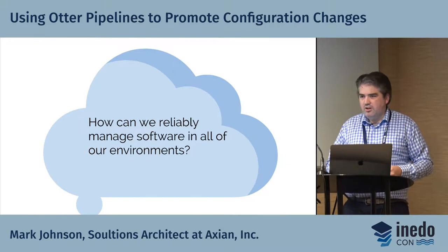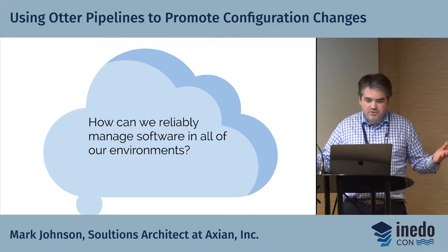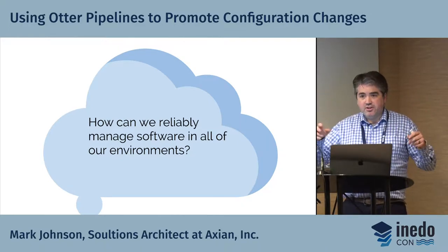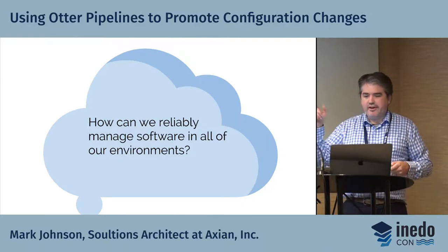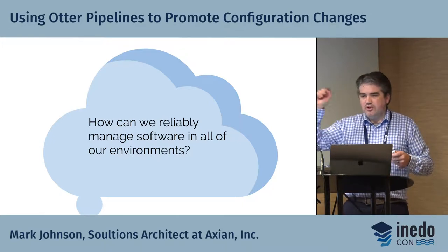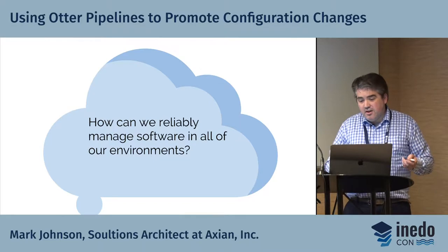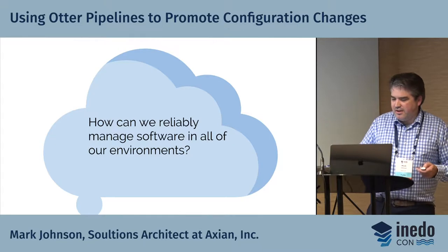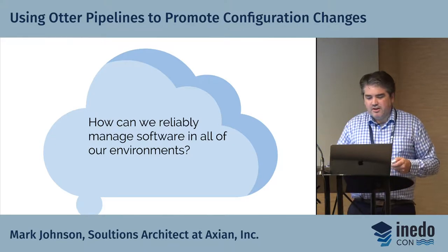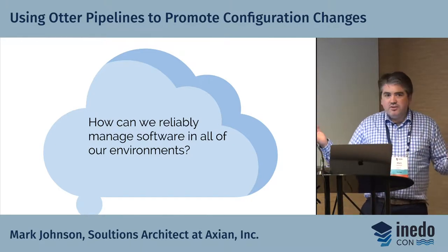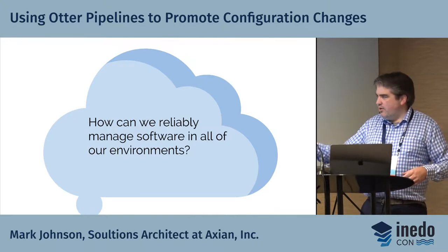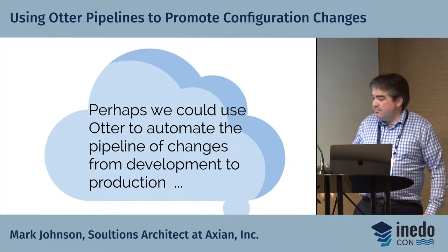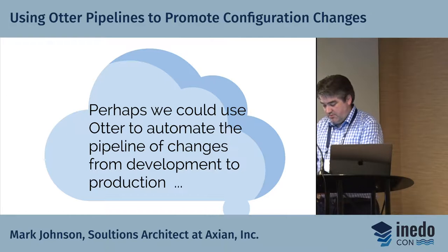How can we reliably manage software in all of our environments? The challenge is, let's say I have one environment — everything's production — and I'm just doing changes in production: installing new software, new versions of software, maybe managing developer build systems. I change the version of NPM or something like that, and how do I know it's not going to break? This is the route of how we do that — perhaps Otter could assist.